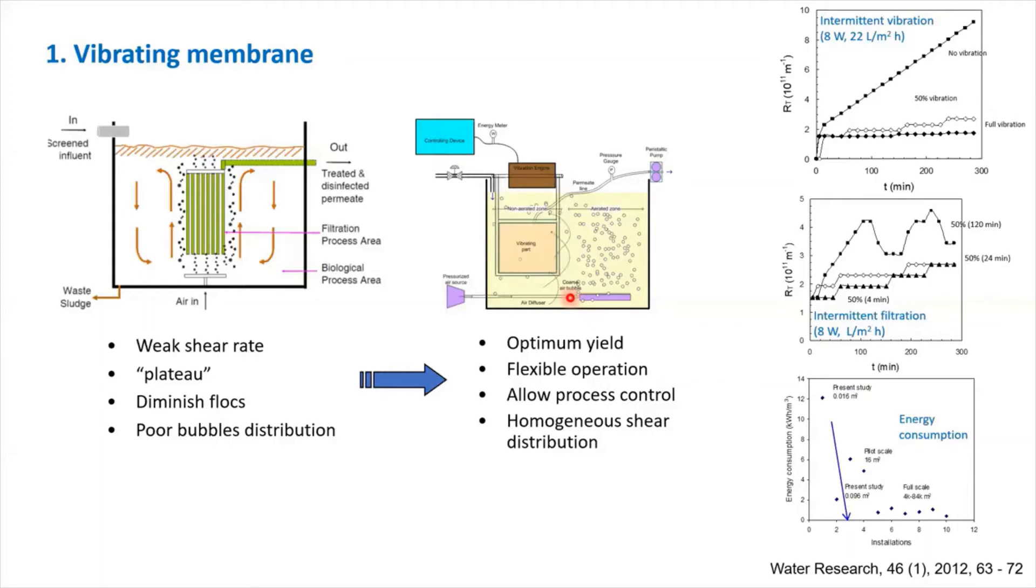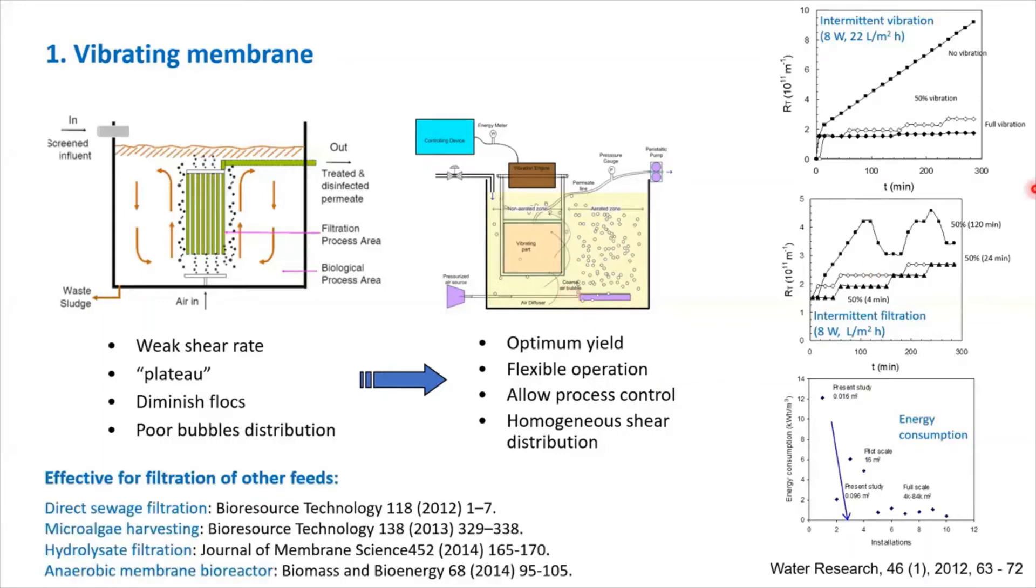We tested on membrane bioreactors, and we find out that the system is highly efficient. As you can see here, if you implement full vibration, you achieve almost no resistance, basically no pressure goes up here, compared to no vibration that continuously increases the resistance. It is highly efficient, the energy can be minimized if you operate it in intermittent operation. And we calculate the energy and the energy consumption is actually very low. The system is also applicable for a lot of different feeds, as you can see from a list of publications we have here.